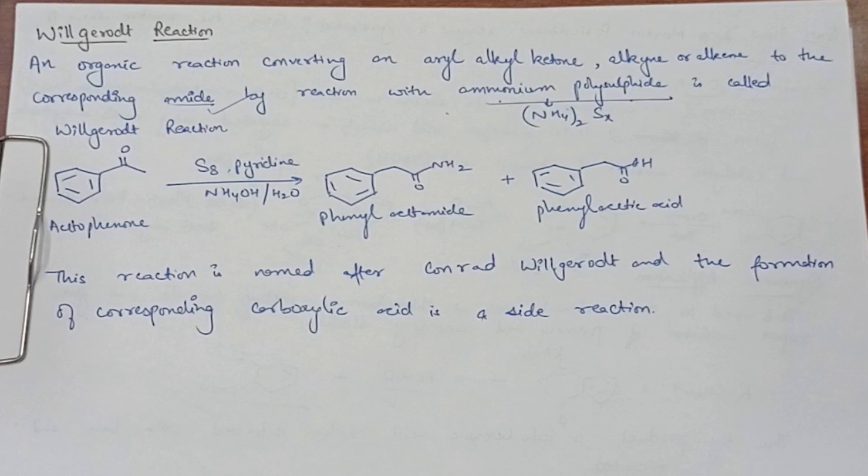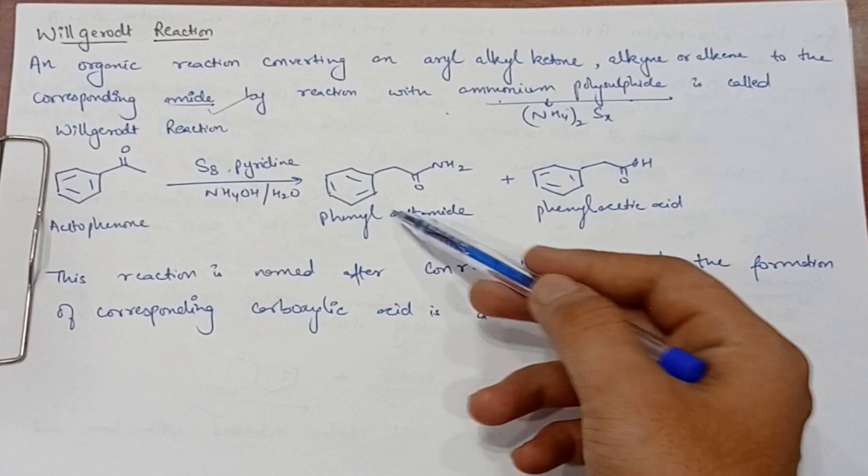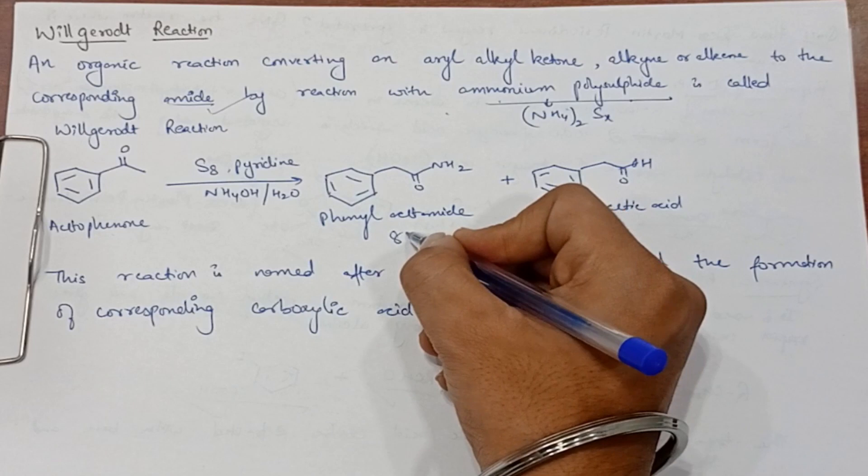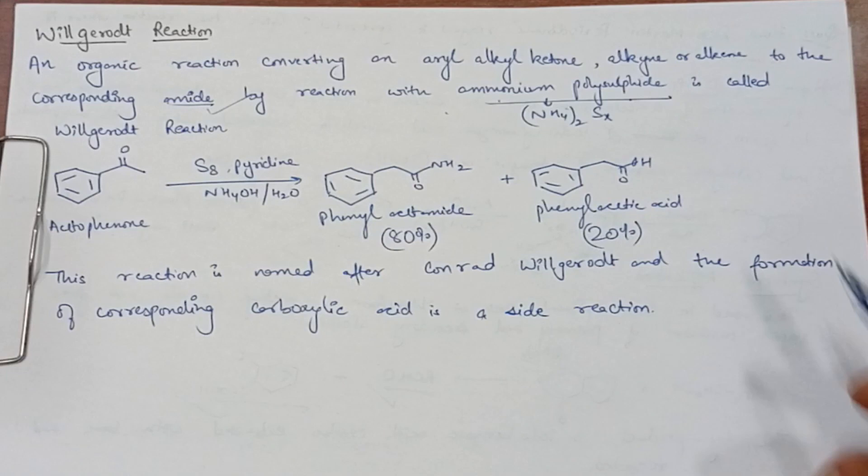This is called Willgiroud reaction. The main feature is forming amide from aryl alkyl ketone using ammonium polysulfide.